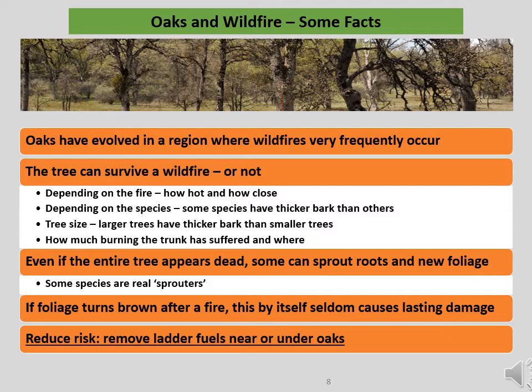Even if the entire tree appears dead, some species can sprout roots and new foliage from the root crown and sometimes even from the branches above. The degree of sprouting depends on the species. In general, evergreen oaks are better sprouters, although blue oaks and black oaks have displayed sprouting ability in recent studies. It should be noted that if foliage turns brown after a fire, this alone seldom causes lasting damage. Damage and death come from burn injuries to the trunk, specifically to the bark and mostly to the thin layer underneath the bark known as the cambium. The important takeaway here is this: to reduce the risk of a fire getting too hot for a tree and killing it, you must remove ground fuels and ladder fuels near oaks.